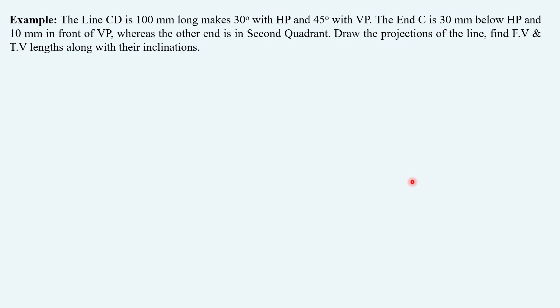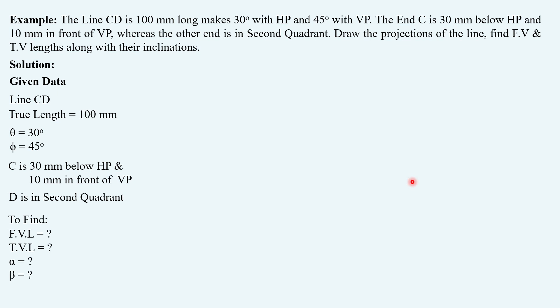Let us extract the given data first. Given line CD, true length 100 mm, theta 30 degrees, phi 45 degrees. C is 30 mm below HP and 10 mm in front of VP, which puts C in fourth quadrant, whereas D is in second quadrant. To find: front view length, top view length, alpha and beta.